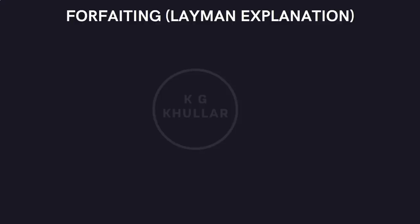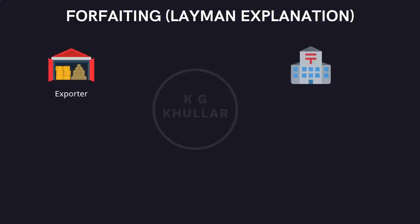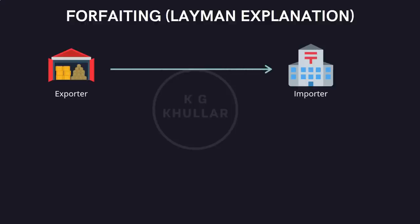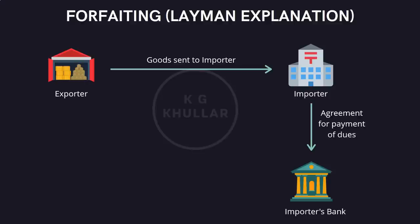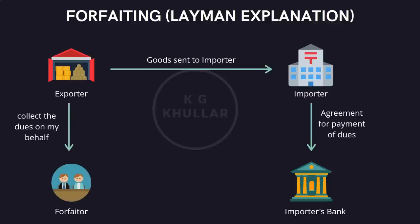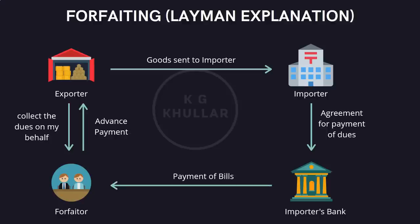Now let's move on to forfeiting. Please note factoring is the concept used when both buyer and seller are in the same region or country. But what if the buyer and seller are in different countries? The recovery process becomes pretty complex. So in case of international trade, instead of factor we use the term forfeiter. In forfeiting the exporter sends the goods to the importer on credit. The importer informs the exporter that all payments will be made via their bank, which we call the importer's bank. The exporter appoints a third party agency called the forfeiter to collect the dues from the importer's bank. The forfeiter then makes the advance payment to the exporter, as was the case in factoring, and finally collects the payment from the importer's bank and settles his dues.